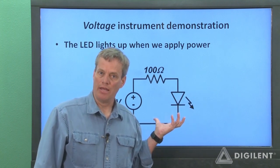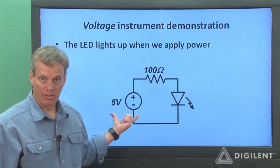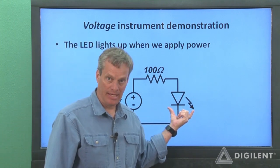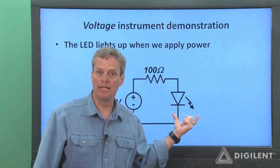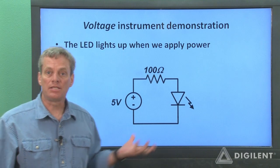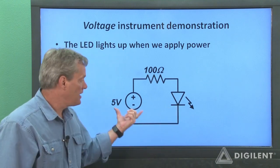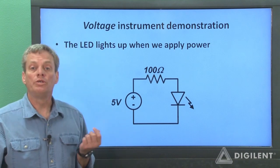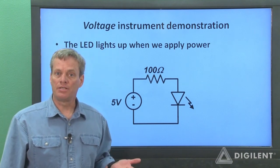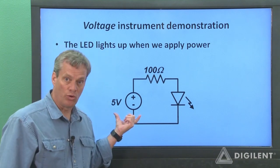Here's a schematic of the circuit we'll create. It uses a 5 volt source to apply power to light up an LED. A 100 ohm resistor limits the power to the LED. This simultaneously protects the LED and keeps the source from having to deliver more power than is necessary. We'll use the voltage instrument on the Analog Discovery to apply this 5 volt source.